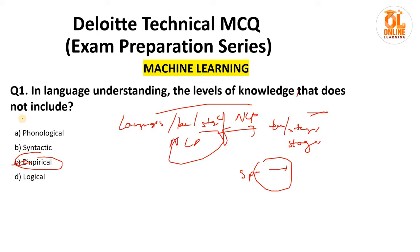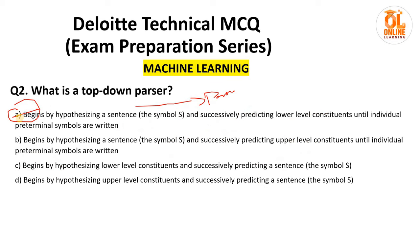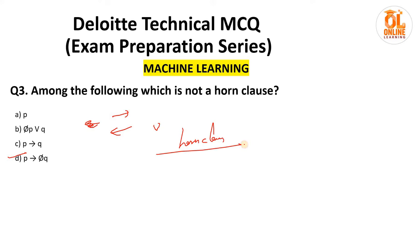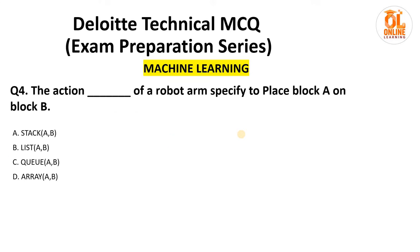Next, a question on horn clauses. Option D is the correct answer — option D is not a horn clause. A horn clause is a basic way to represent relations, similar to how we represent relations with set elements. To understand this more, learn what a horn clause is. I recommend going through this topic.